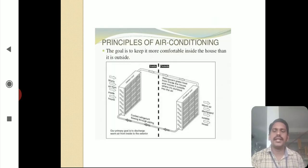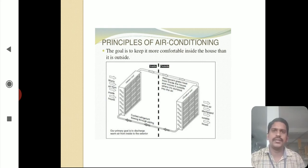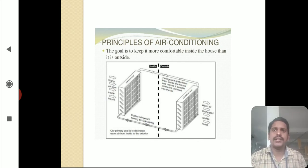The principle of air conditioning — the goal is to keep it more comfortable inside the house than outside. The main principle is to compare two temperatures: inside and outside. The room is more comfortable than the outside because you maintain a low or high temperature in a comfortable manner by using air conditioning systems.